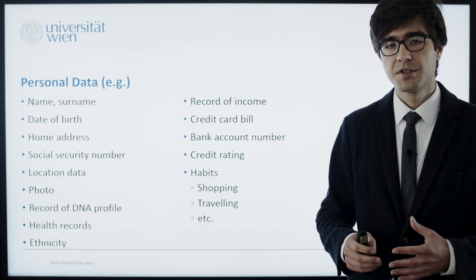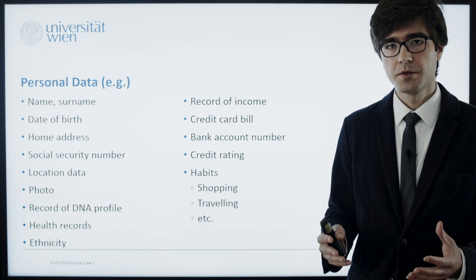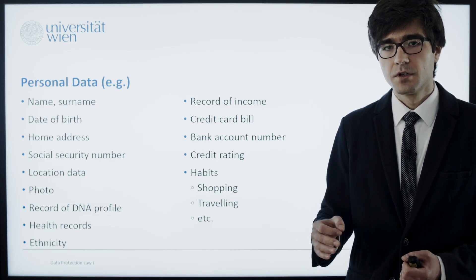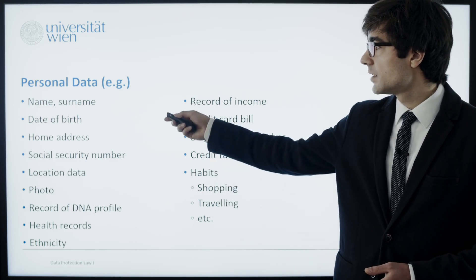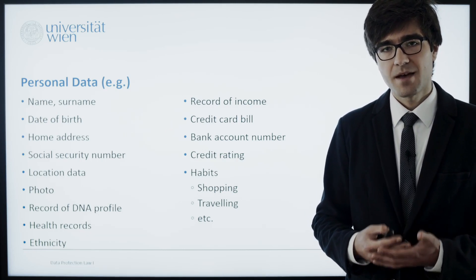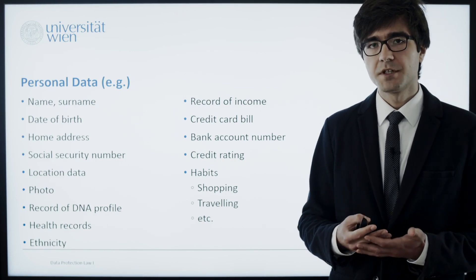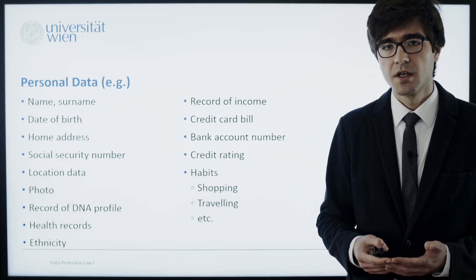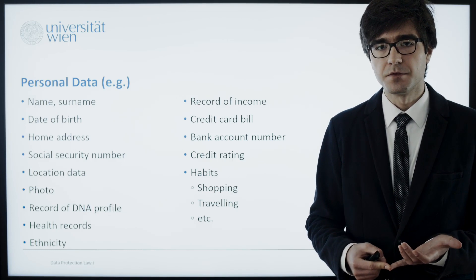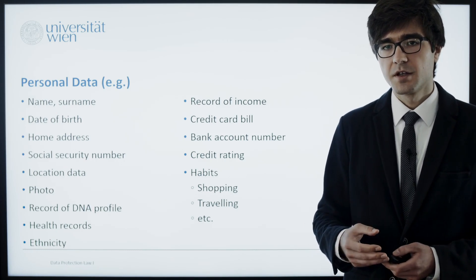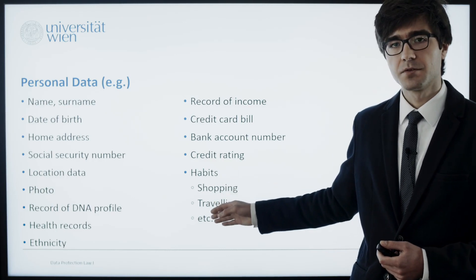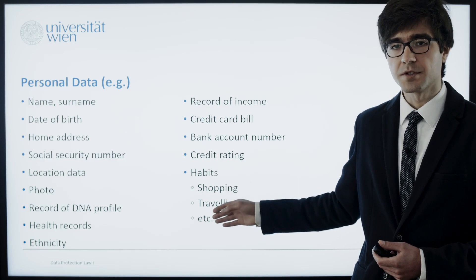If you look at this slide, there are basically two groups of personal data. One group is the so-called identifiers — data where at first glance it is clear which person it relates to, like name, surname, date of birth, or home address. But there is also data that can reveal the habits of a natural person. Take, for example, an airline that collects data about their passengers: how often they travel, where they travel, what they eat on the plane, what they buy in the duty-free zone. If the airline possesses all of this data, they can reconstruct the habits of natural persons — shopping habits, traveling habits, dietary habits — and this is also considered personal data and is therefore protected by the GDPR.